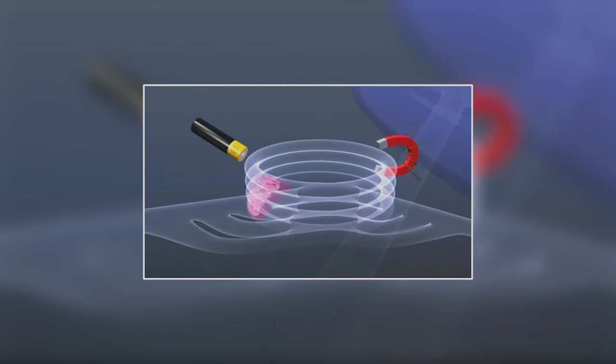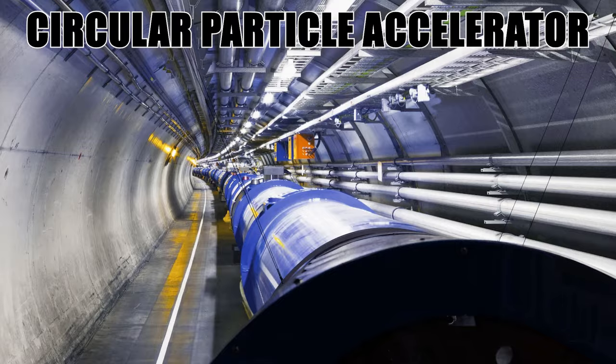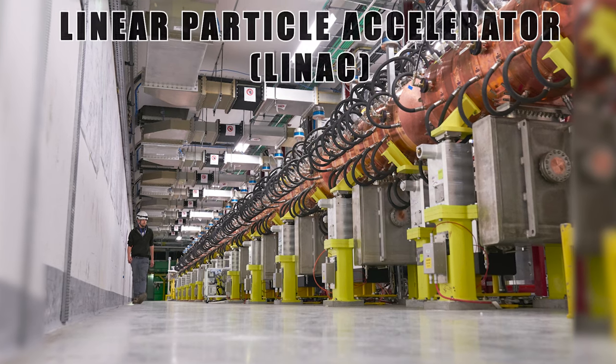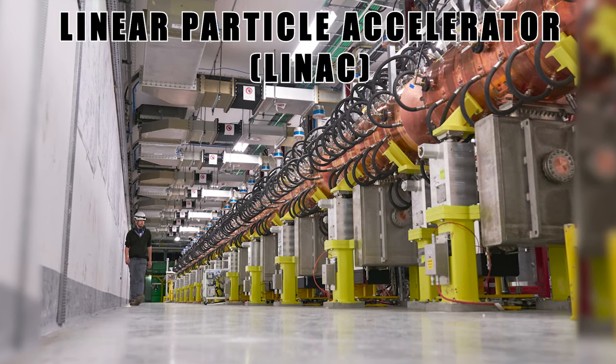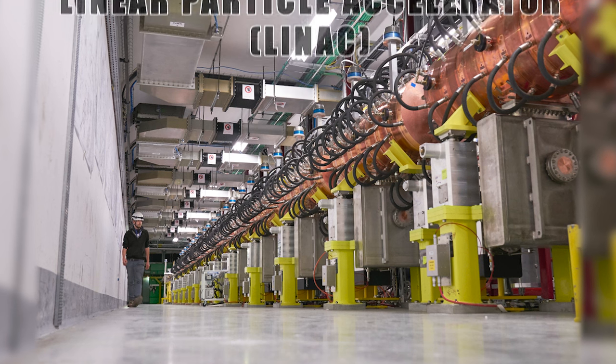There are two types of accelerators, linear and circular. The linear accelerators, or LINAC, as the name suggests, have a straight beamline, and the particles shoot straight forward at a fixed target.